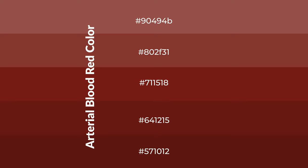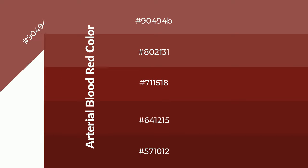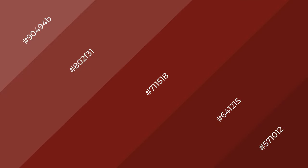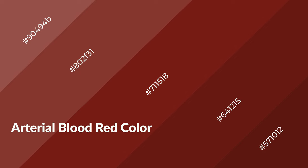To generate shades of a color, we add black to the color. Shades are used in patterns, 3D effects, and layers, and they create depth and drama. Arterial blood red is a warm color and it emits cozier and active emotions.